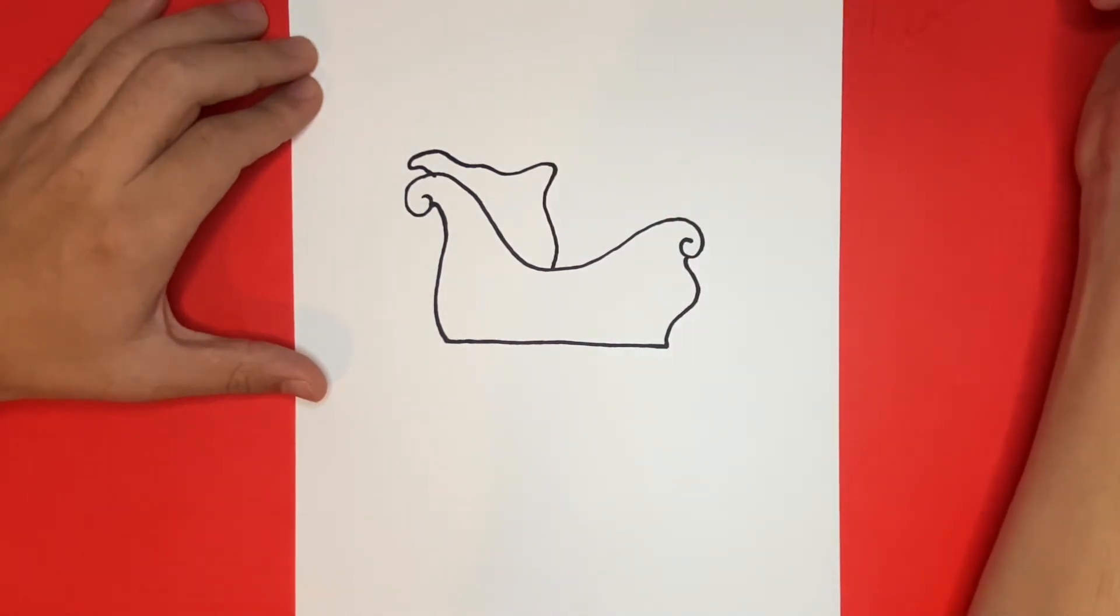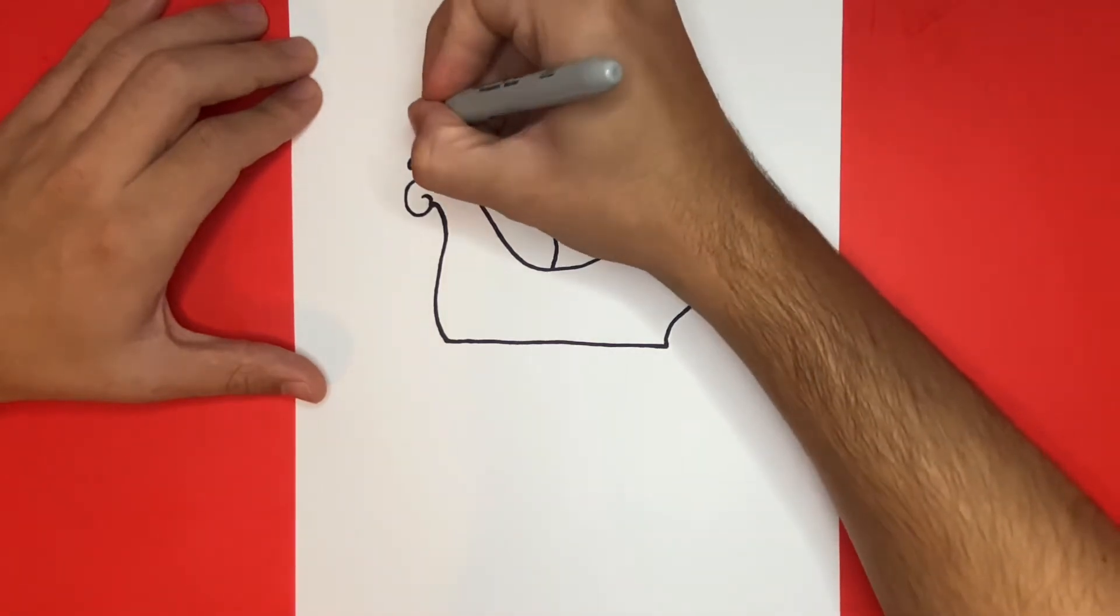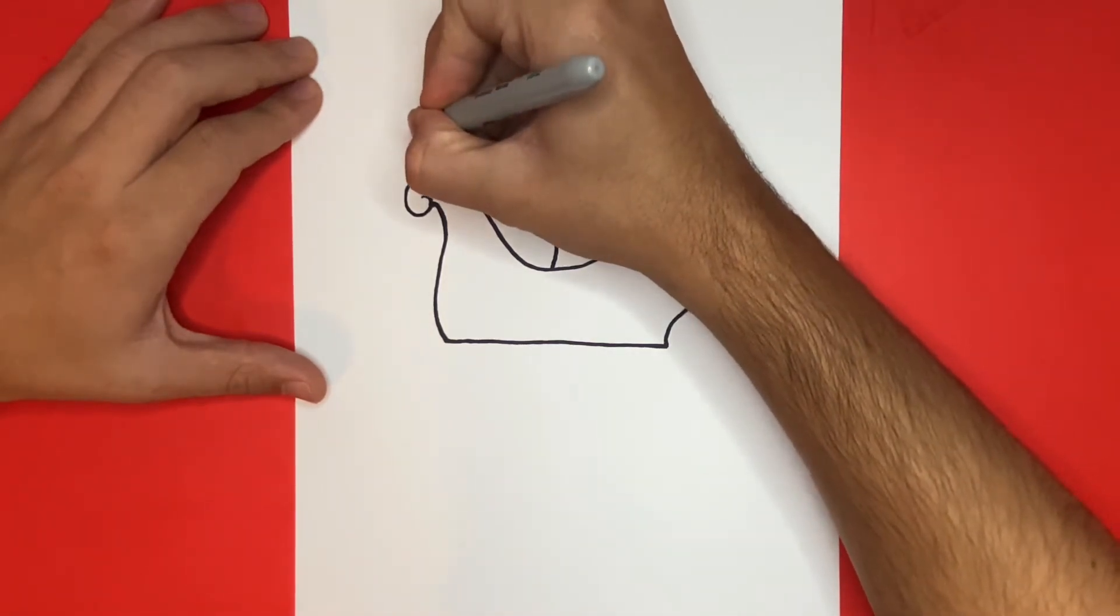Next we're going to begin to add in the presents. We're going to draw the first present on the top left hand side of the bag that we just made. This part might be a little bit tricky so be sure to pause the video as you need to.